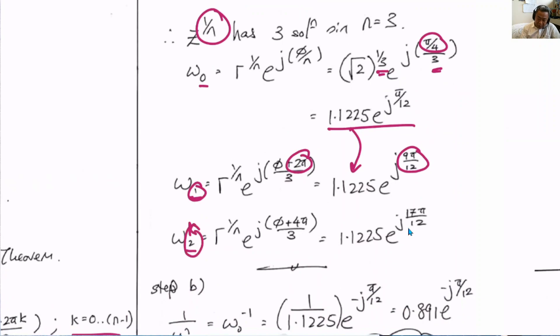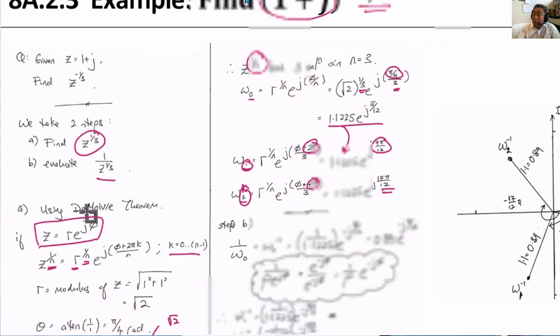The last one, k equals to 2. Again, your 2πk, k is 2, becomes 4π. So it's φ plus 4π divided by 3, work it out, it's 17π divided by 12. So we now have three solutions.